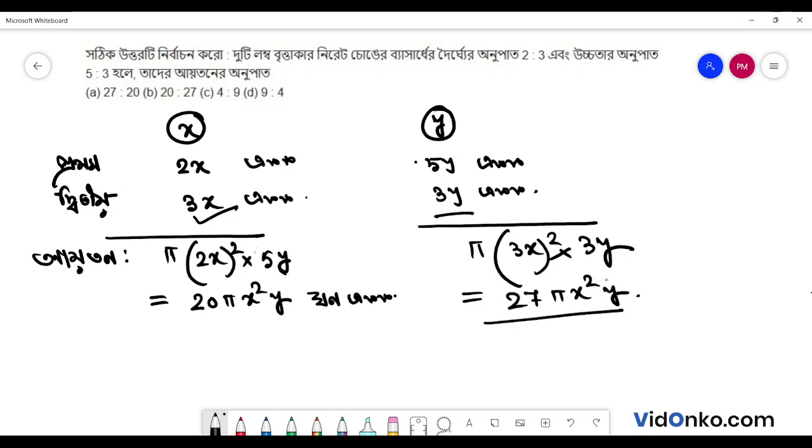How do you see this one? Then 1. Now, how do you see this one? In other words, then 20 pi x squared y to 27 pi x squared y. This one is to say 20 to 27.